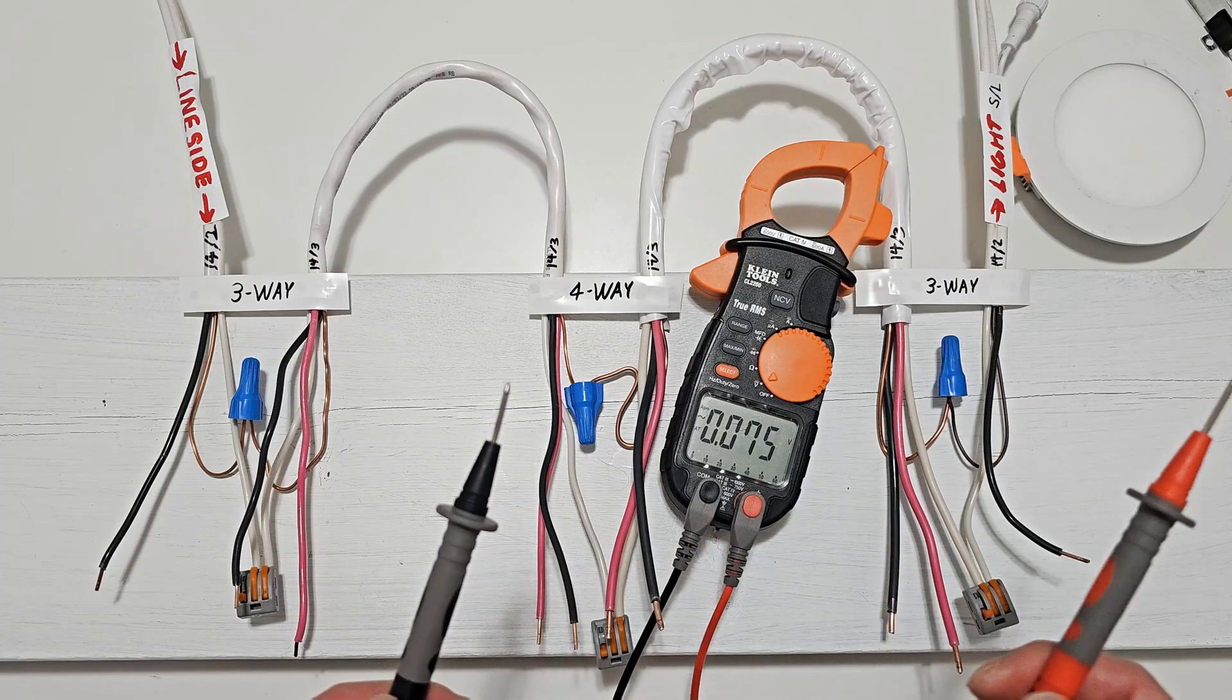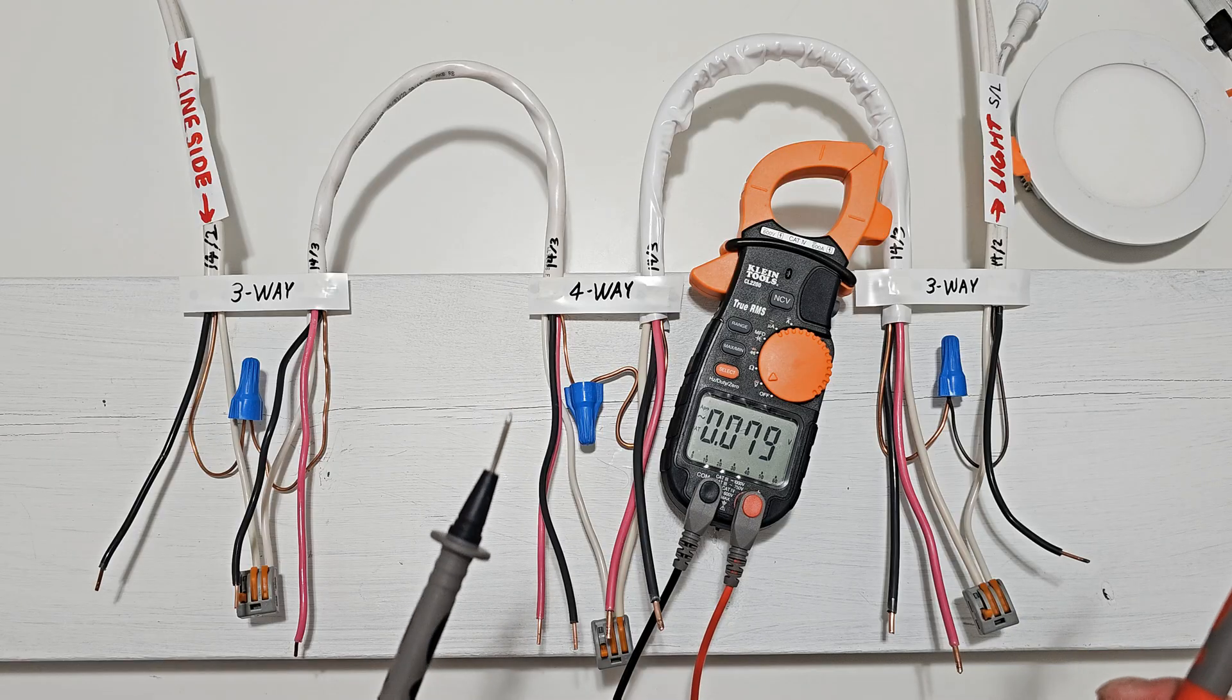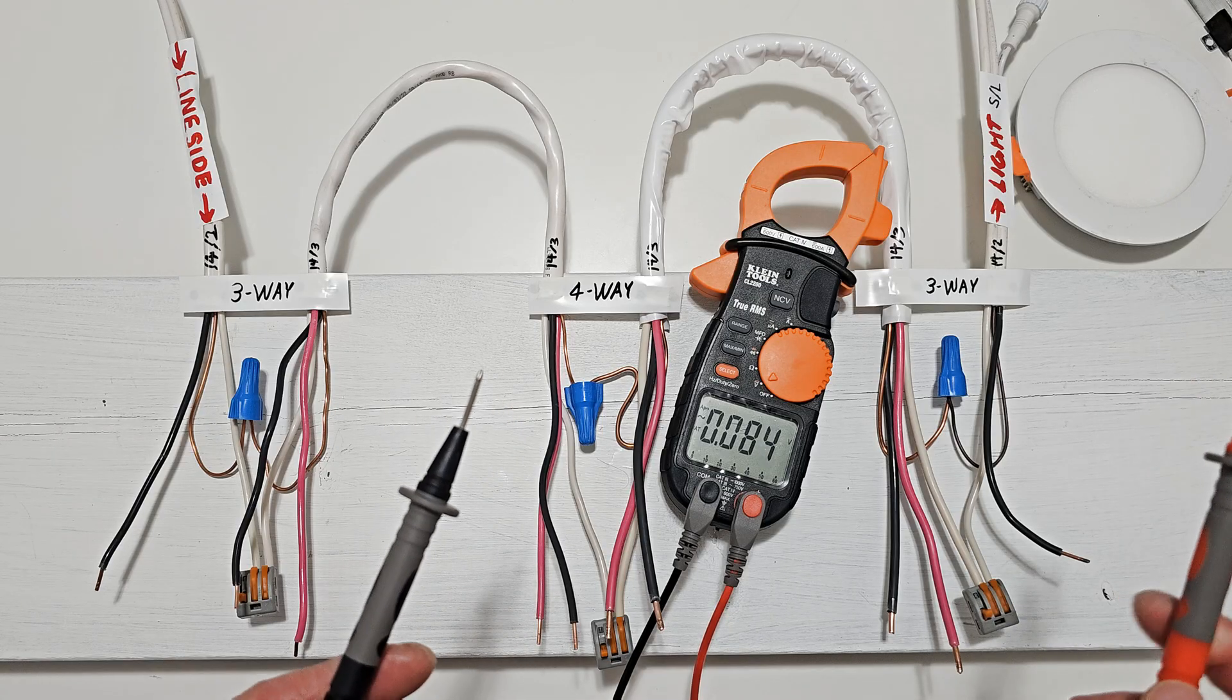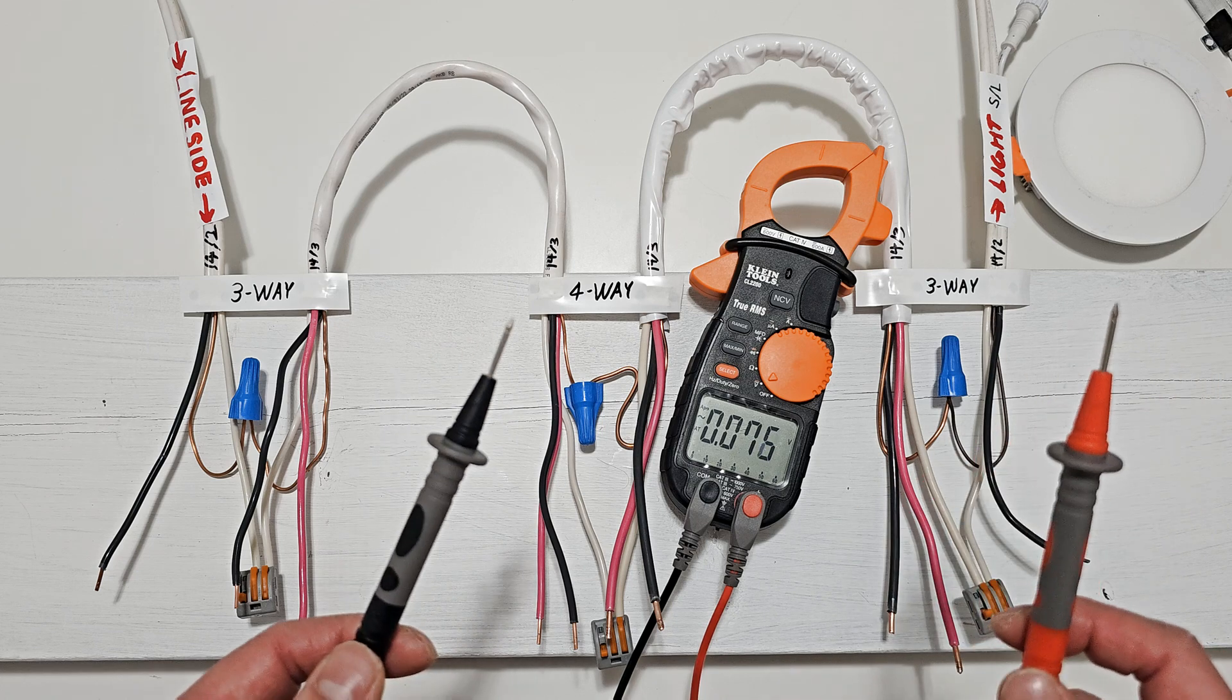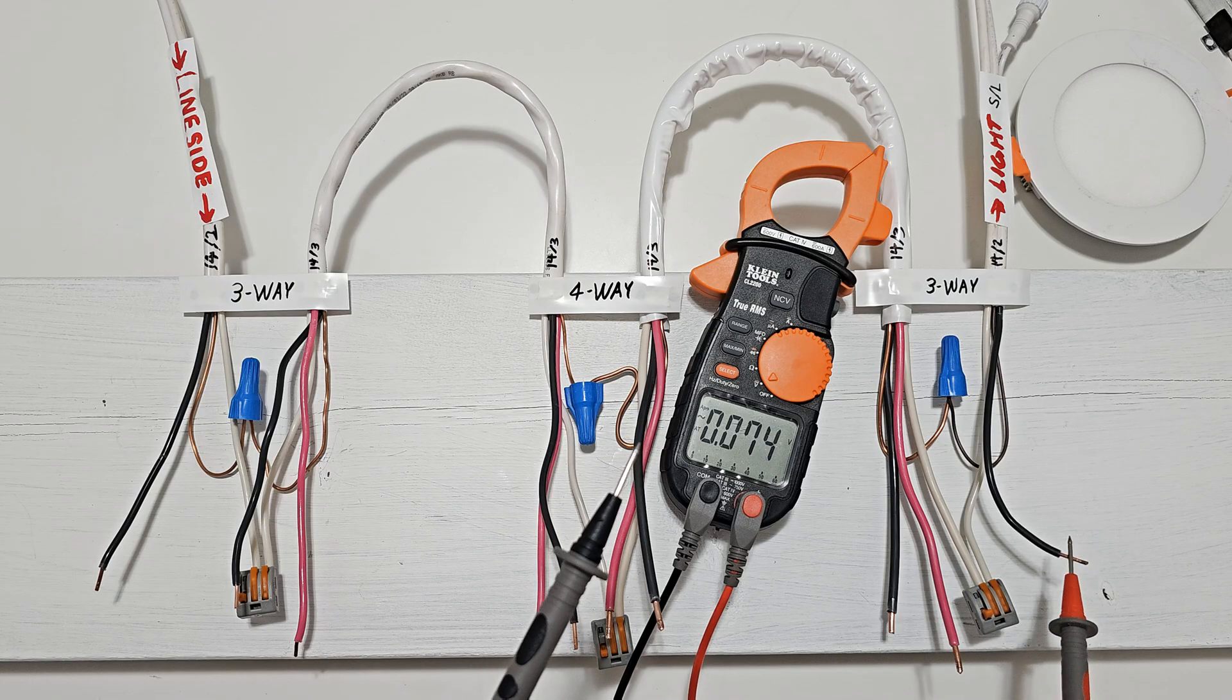If you have more than one light fixture on the circuit, we will need to identify which 14-2 wire carries the power source. Carefully turn on the breaker, and next we will need a voltmeter.